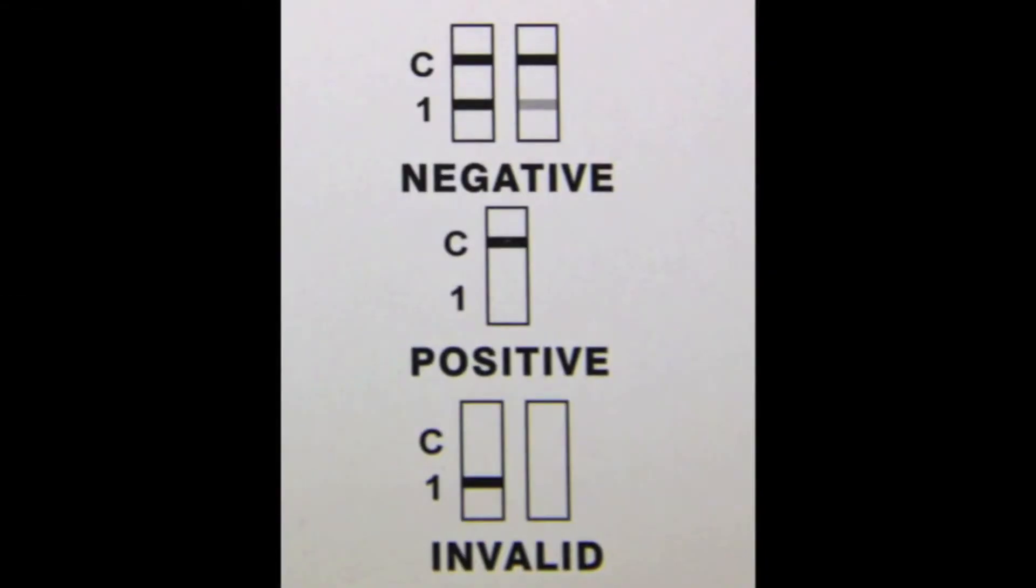If a line appears in both the control and drug regions, the test is negative. If a single line is in the control region, it's a positive result. If a single line is in the drug region, the test is invalid. All positive test results are presumptive and should be confirmed by using an alternative method such as GC-MS.